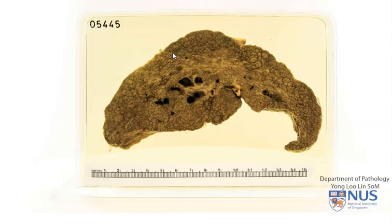Therefore, in summary, this is a case of micronodular cirrhosis, and we can also see that there is accompanying greenish discolouration of the liver parenchyma, and this is a case of biliary cirrhosis.